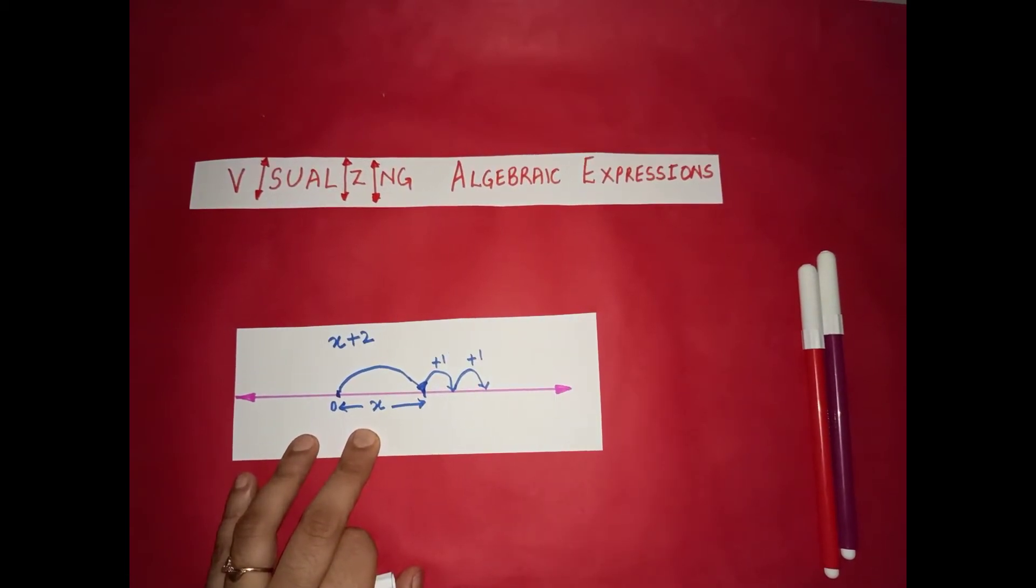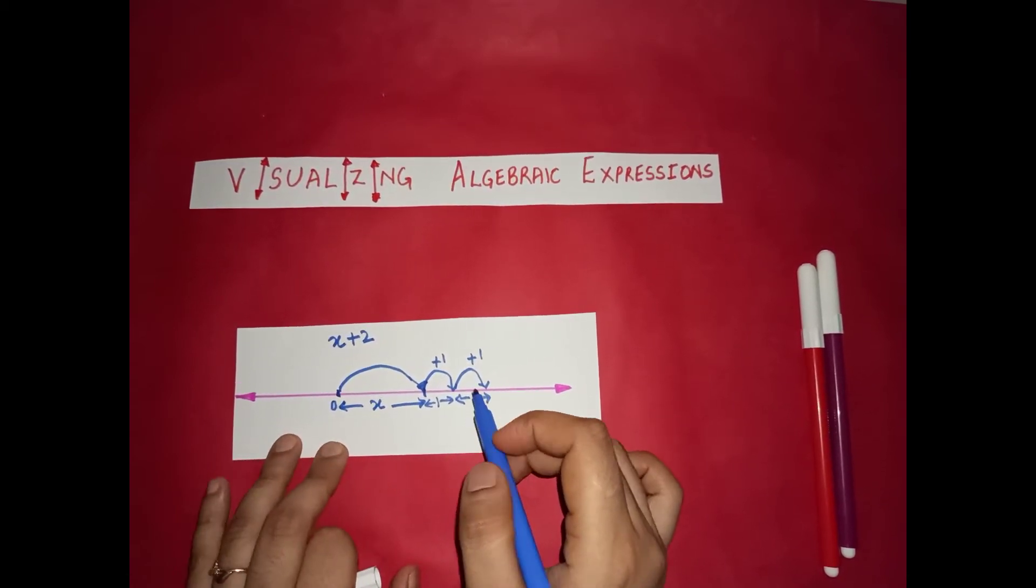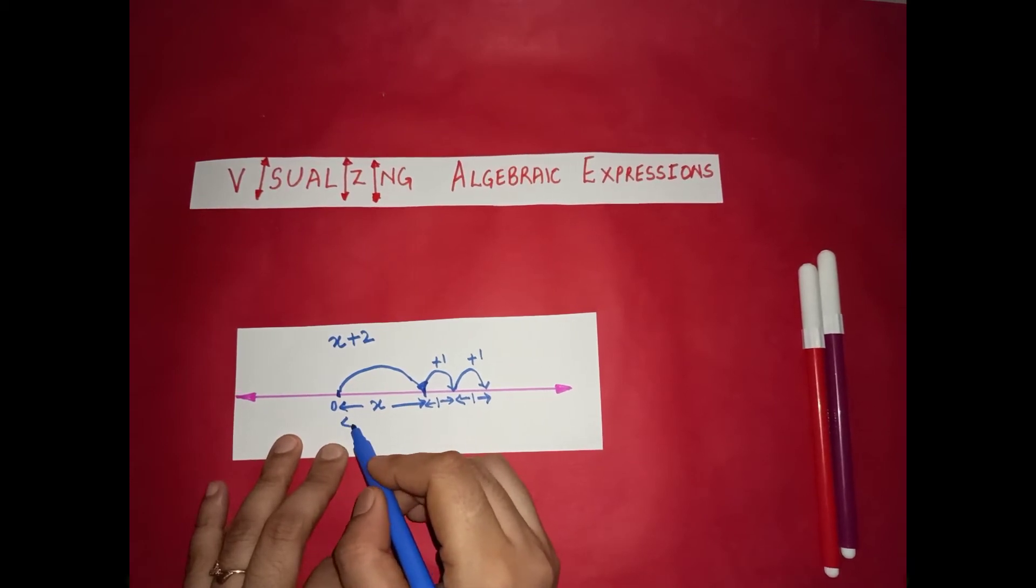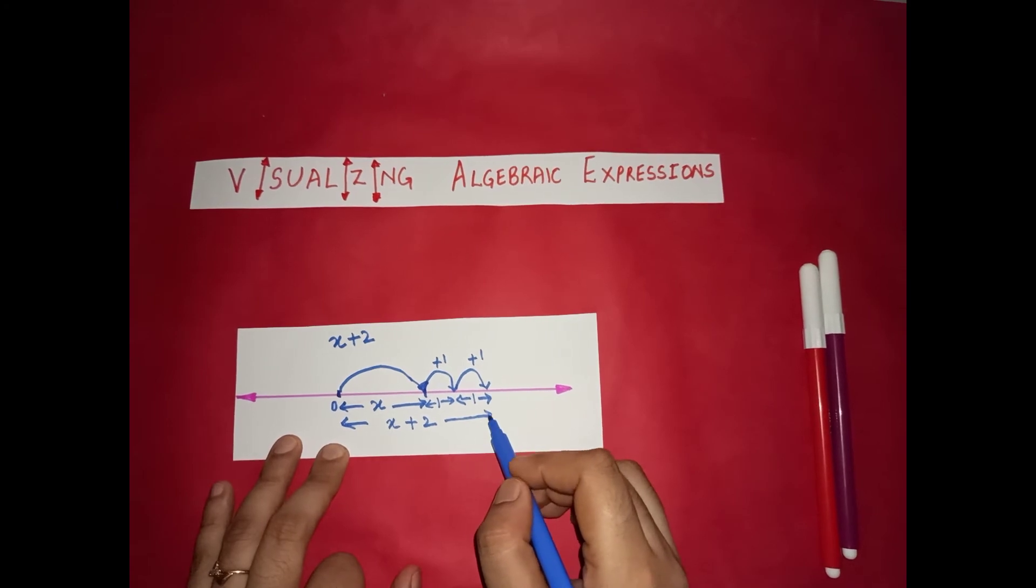x plus 2. So that means this distance covered is 1. So total distance covered is x plus 2. So we have visualized another expression using the number line.